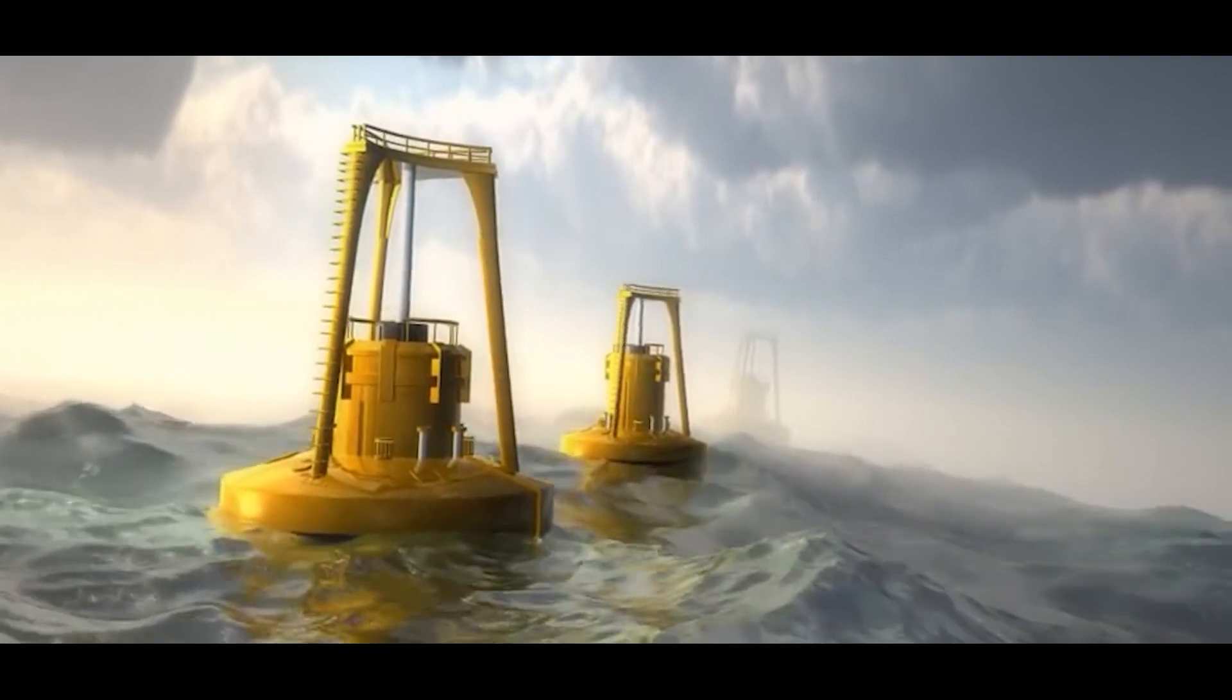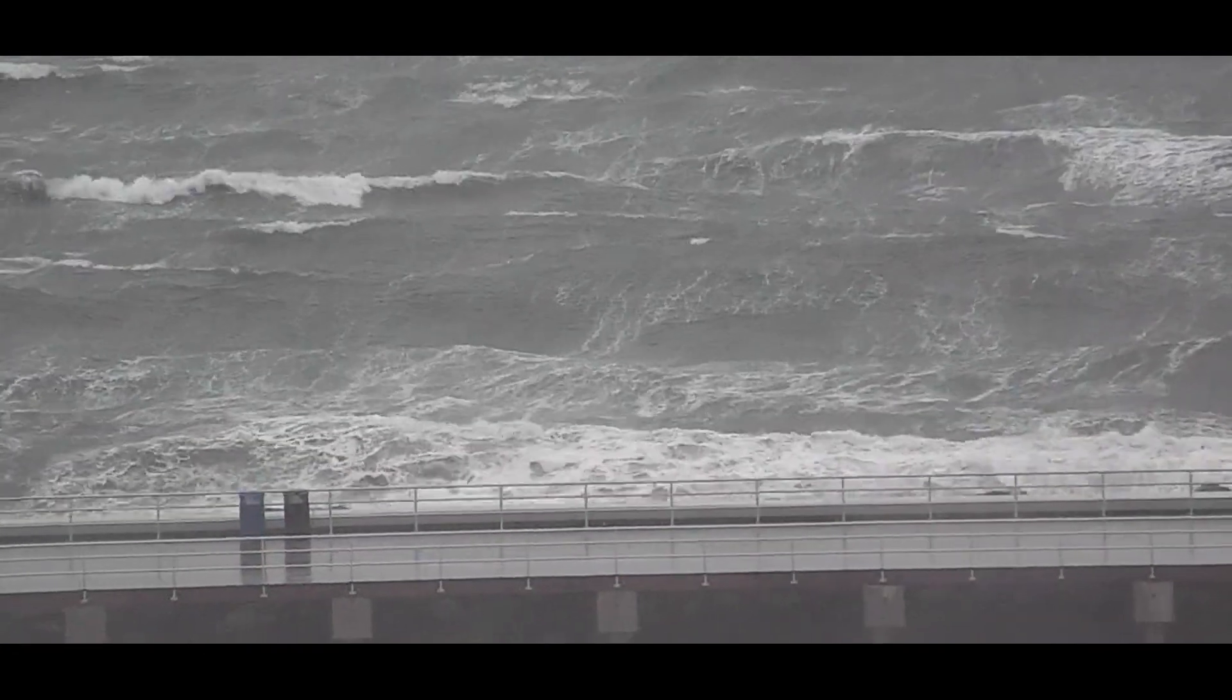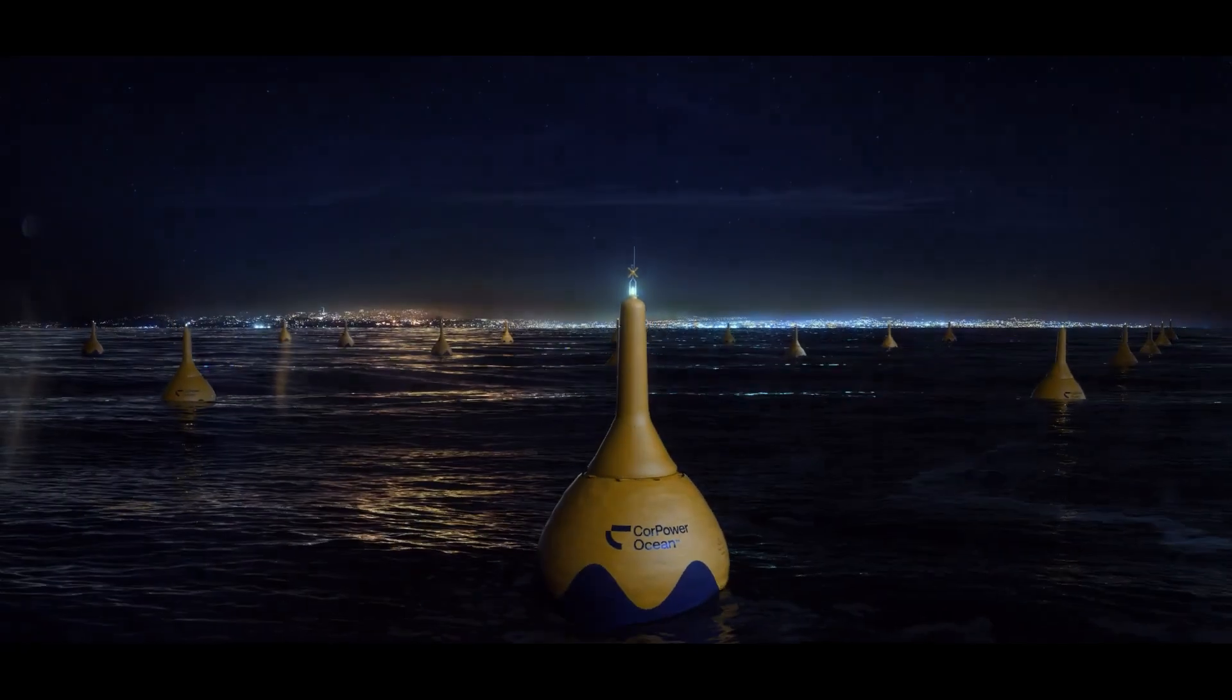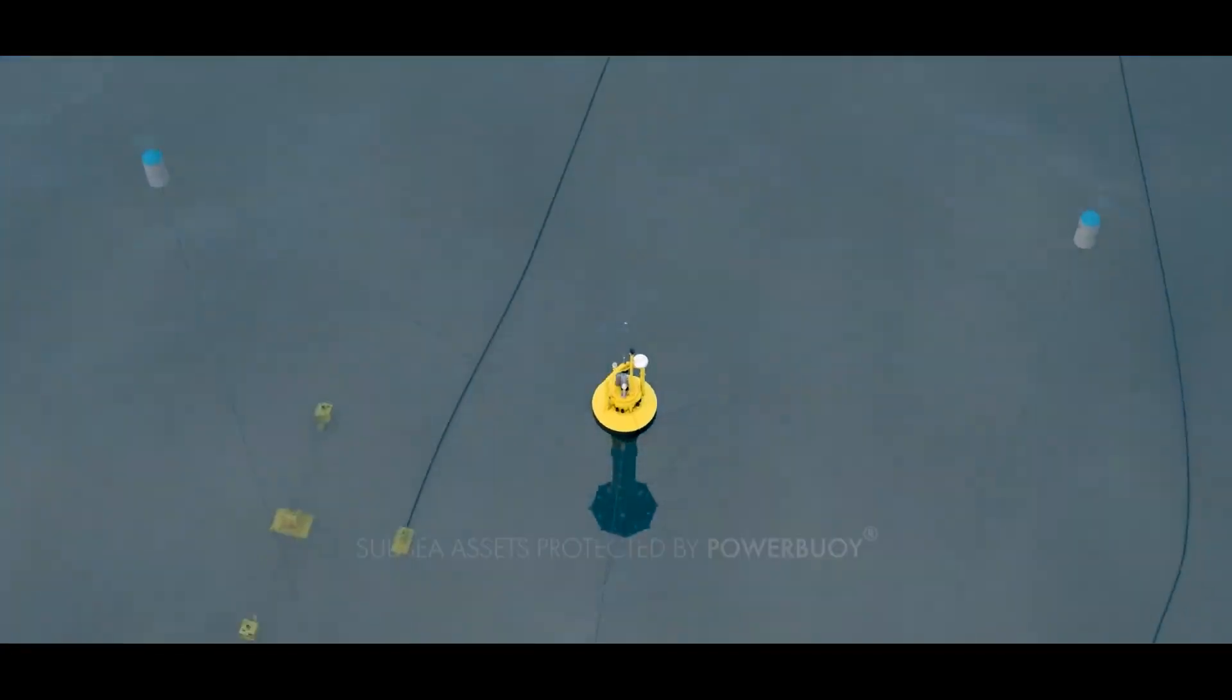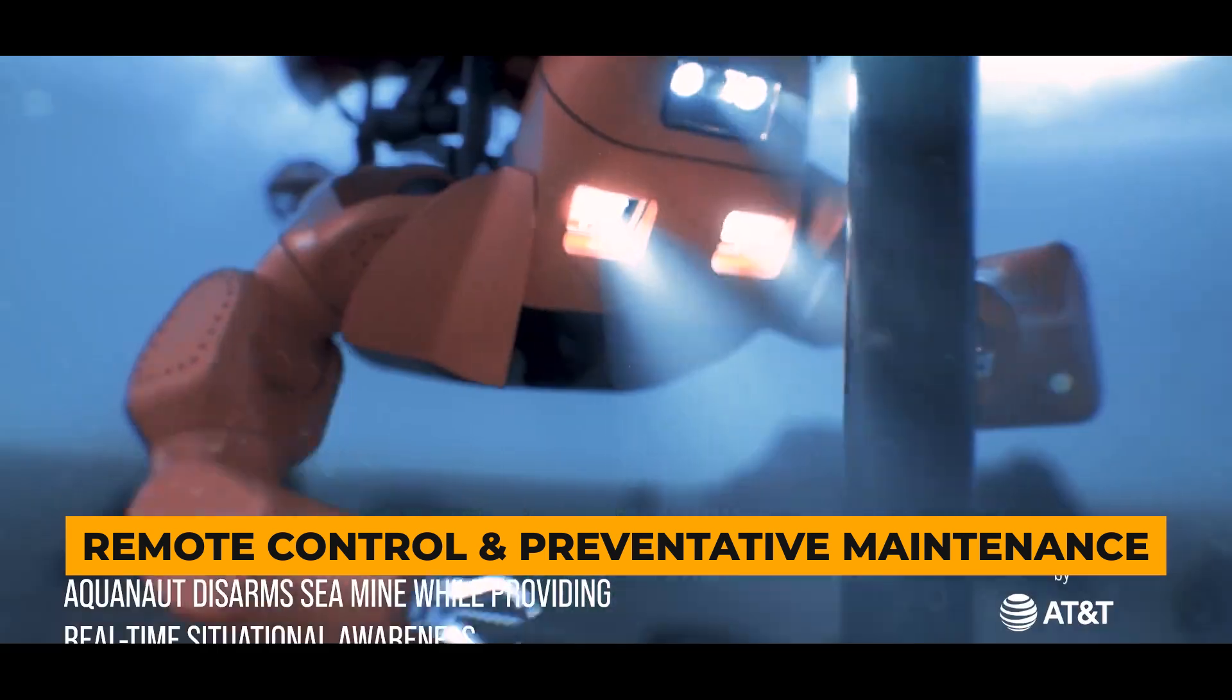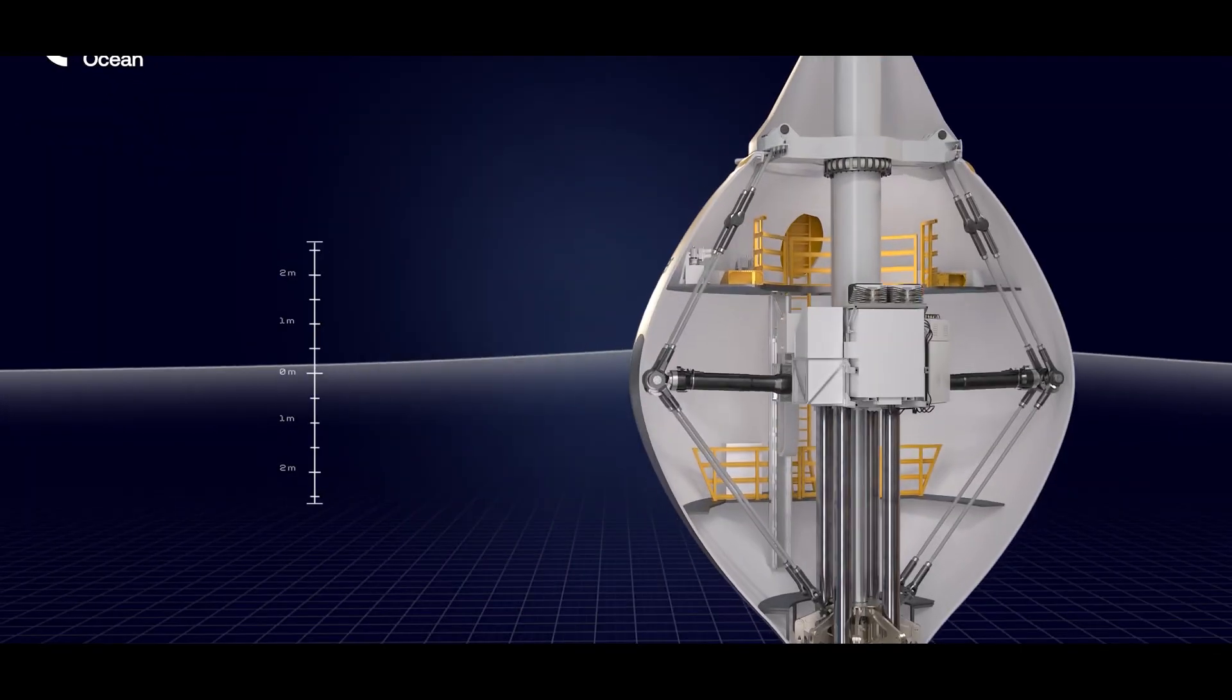The PB3 is built to withstand the ocean's fury. Its robust design can handle even the most turbulent waves, making it a reliable source of power even in harsh weather conditions. This buoy isn't just brawn, it's also brainy. Built-in sensors and advanced monitoring systems constantly track its performance and environmental conditions. This information allows for remote control and preventative maintenance, minimizing downtime and maximizing efficiency.